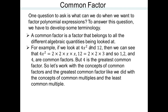For example, if we look at 4x squared and 12: 4x squared has 2 times 2 times x times x, and 12 is 2 times 2 times 3. So 1 is a common factor for all objects because 1 is the multiplicative identity. But 2 is a factor of both, and 4 is a factor of both. So 1, 2, and 4 are common factors of 4x squared and 12. But 4 is the greatest common factor — the largest common factor that belongs to both.